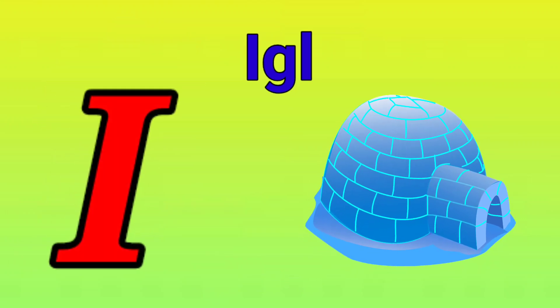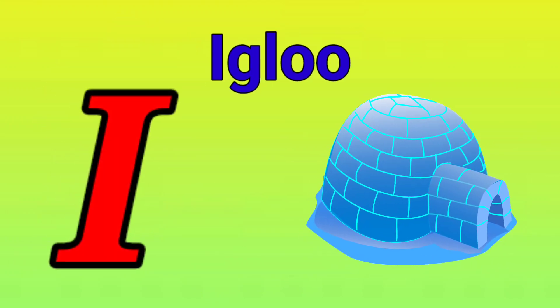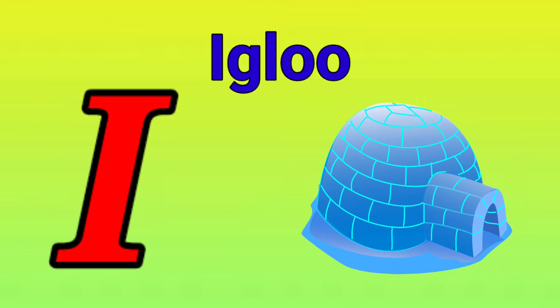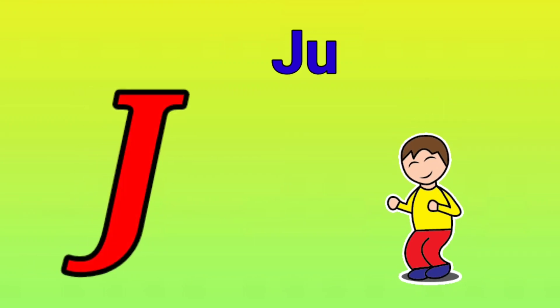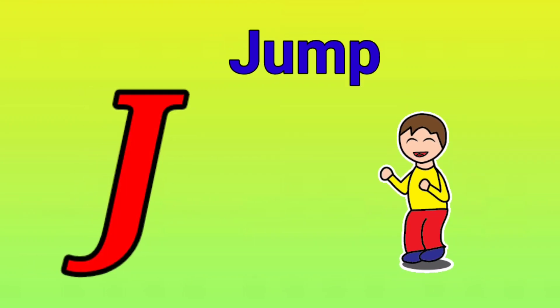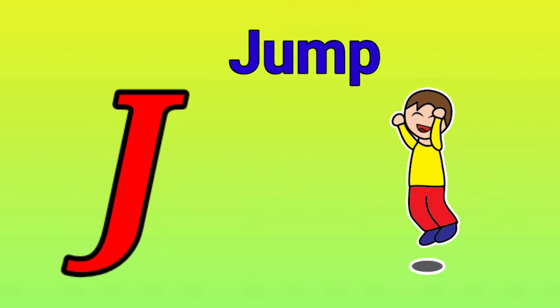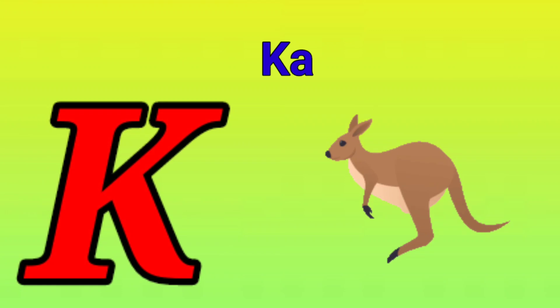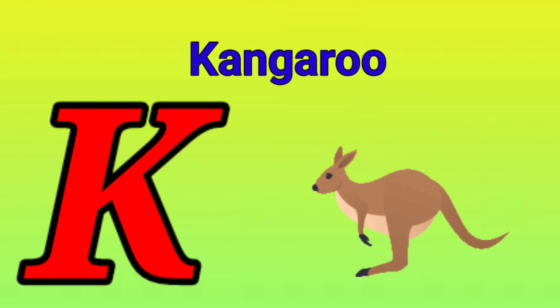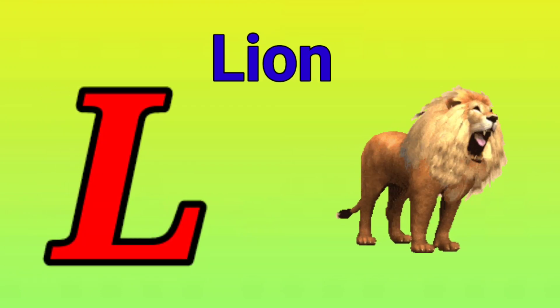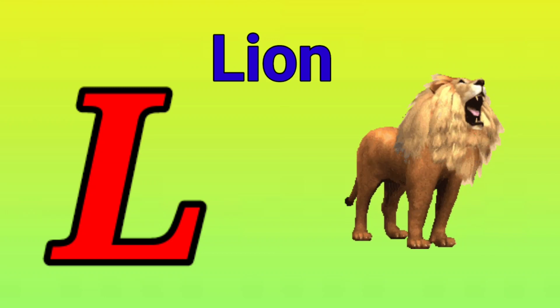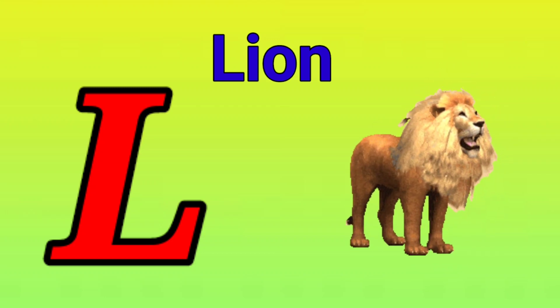I is for igloo, i-i-igloo. J is for jump, j-j-jump. K is for kangaroo, k-k-kangaroo. L is for lion, l-l-lion.